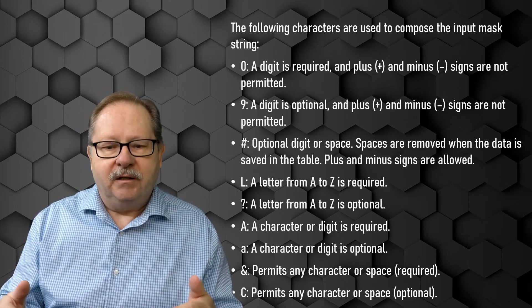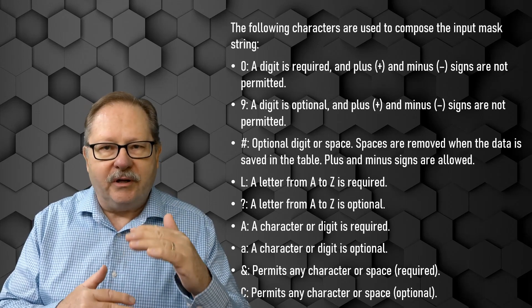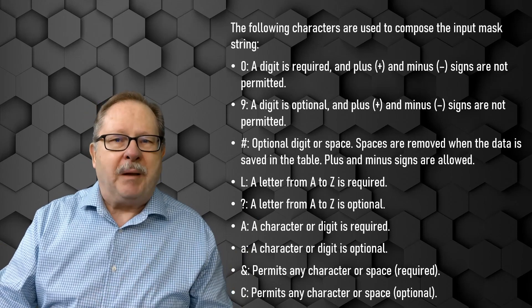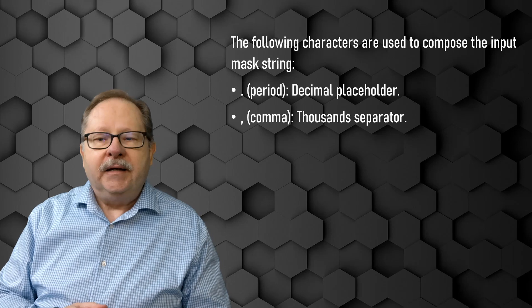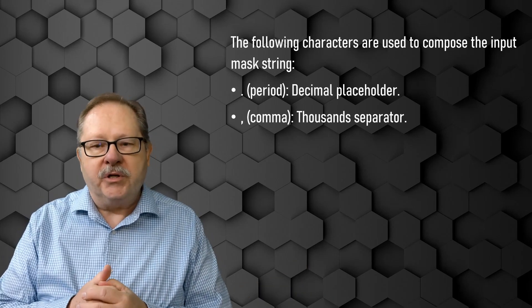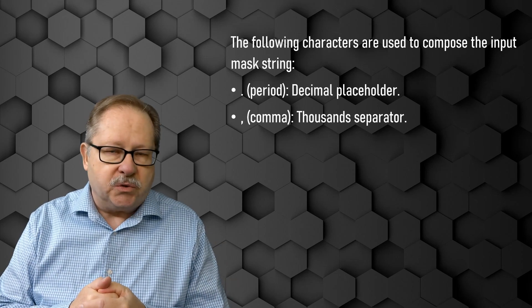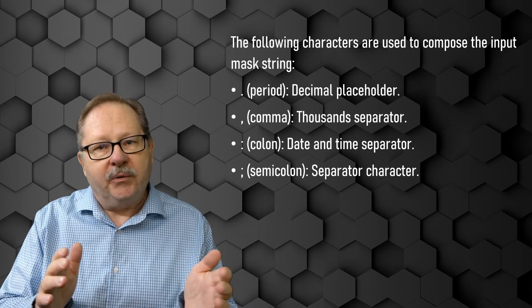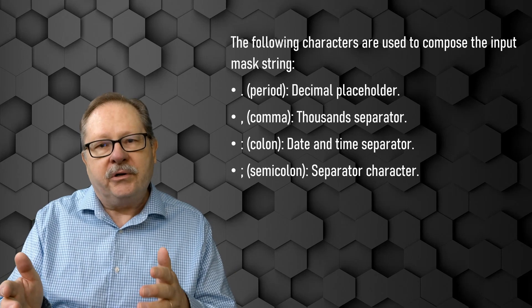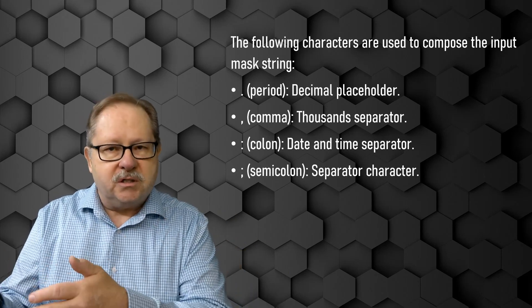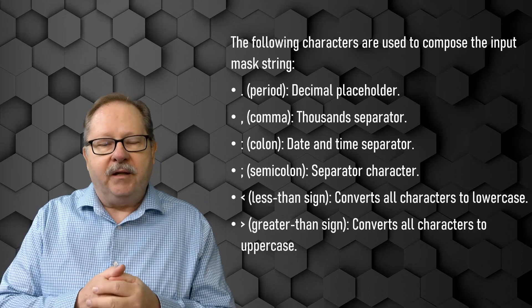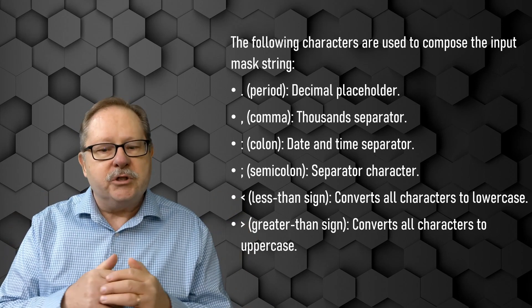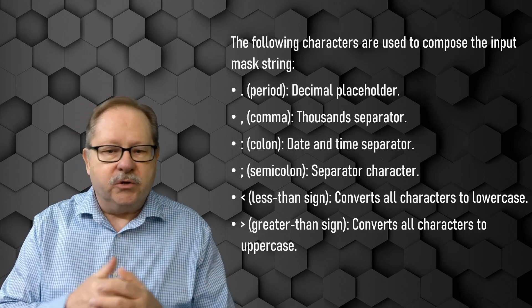The letters and characters — optional versus required — really do require a cheat sheet since there's no logical pattern. For numbers: the period is a decimal placeholder and the comma is a thousands placeholder. A colon is a date-time separator. A semicolon is used to separate the different sections of the input mask. The less-than sign converts everything to lowercase, and the greater-than sign converts everything to uppercase.